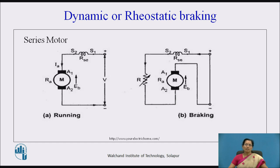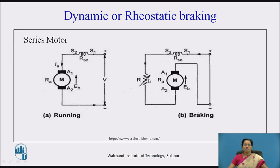Now let us discuss dynamic or rheostatic braking for a series motor. The current direction is downward; the supply voltage is disconnected and a resistance is connected. For rheostatic or dynamic braking of a series motor, we reverse the connections of the armature winding or field winding so that the direction of the current through the series motor is reversed and the torque on the motor is reversed. A1 is connected to the negative and A2 is connected to the positive through a variable resistance, so the opposite torque is created and the motor tries to stop.